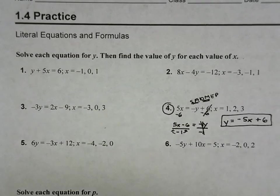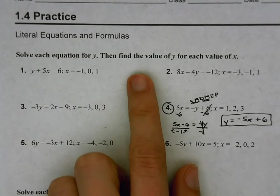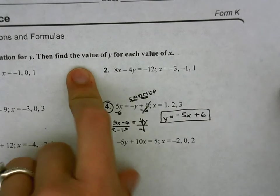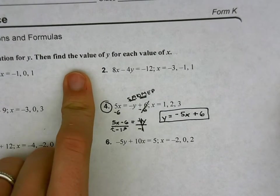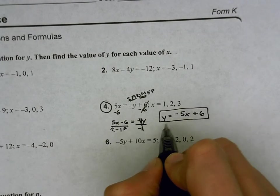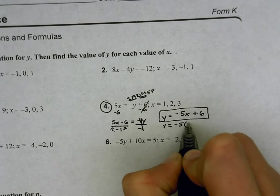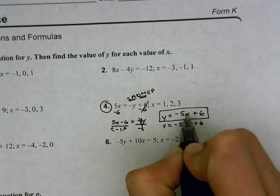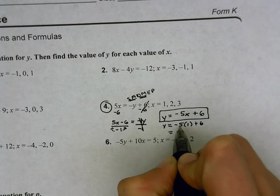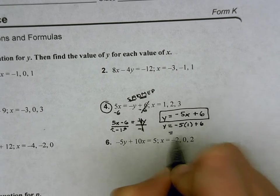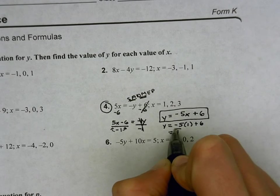Okay, so you've completed the first part of our directions there. The second part of our directions say find the value of y for each value of x. And so my first value of x here is 1, which means I'm going to take that 1 and I'm going to plug it in to my x's spot. So this x is going to become 1. So we have negative 5 times 1, which is negative 5, plus 6. And negative 5 plus 6 is 1.